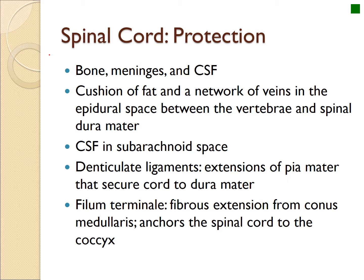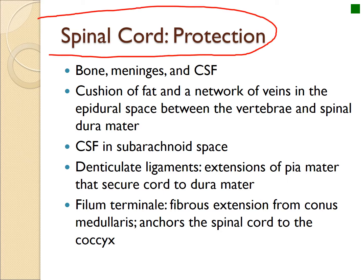The spinal cord, just like the brain, is protected by bone and meninges — much thicker bones including the wing processes, transverse processes, and the body of the vertebral column. It's also protected from pinching by the way the vertebral column bends, extends, and flexes.